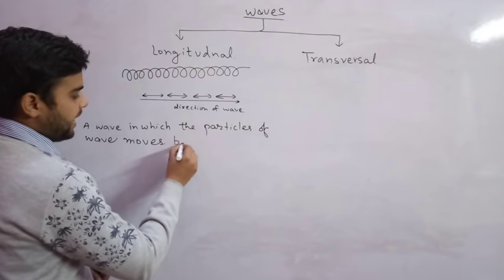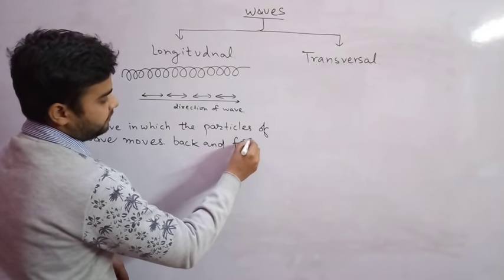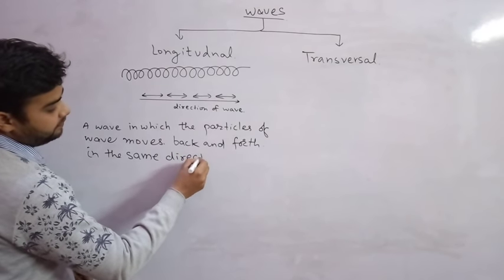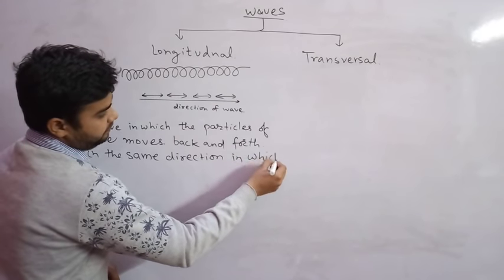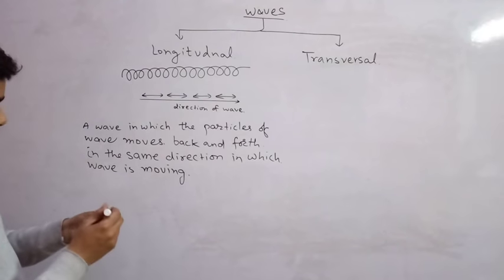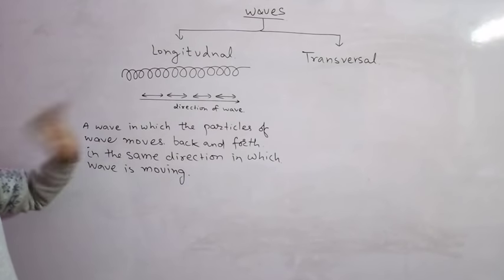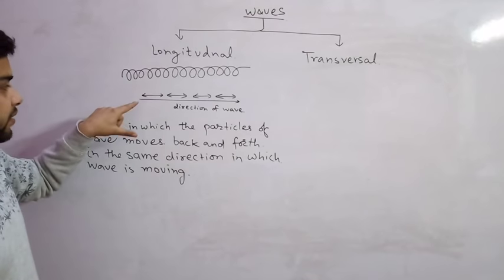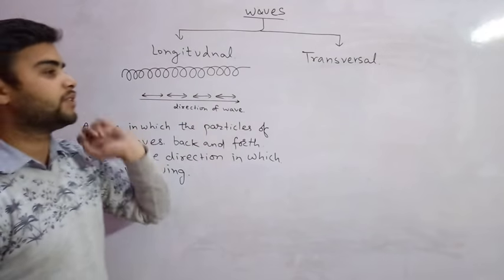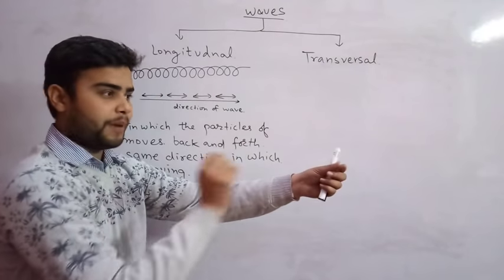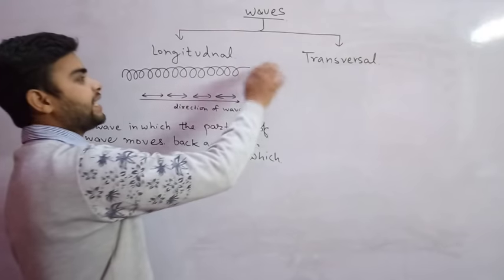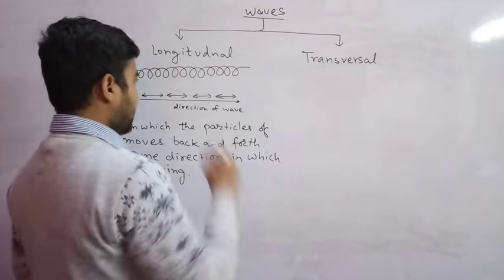...back and forth in the same direction in which the wave is moving. So this is the definition of longitudinal waves: a wave in which the particles move in the same direction in which the wave is moving.